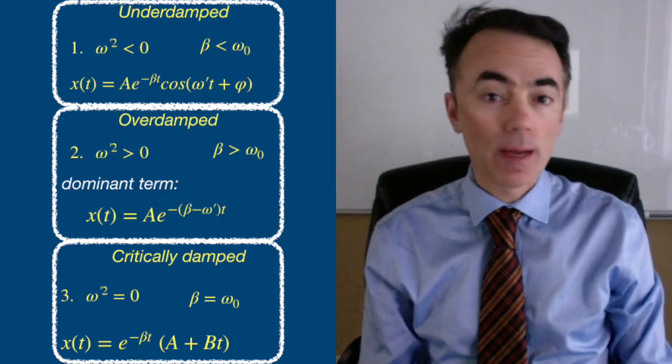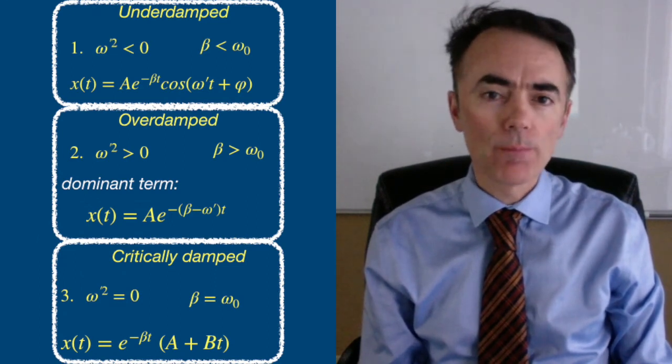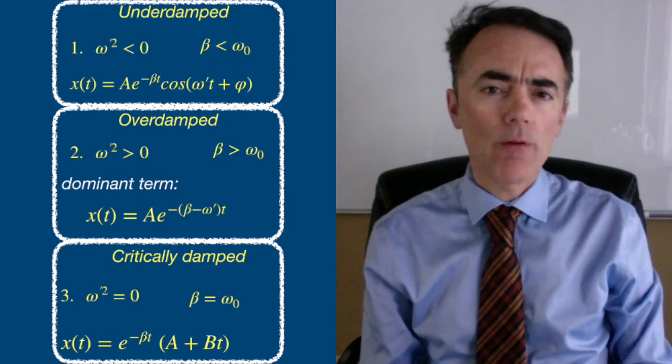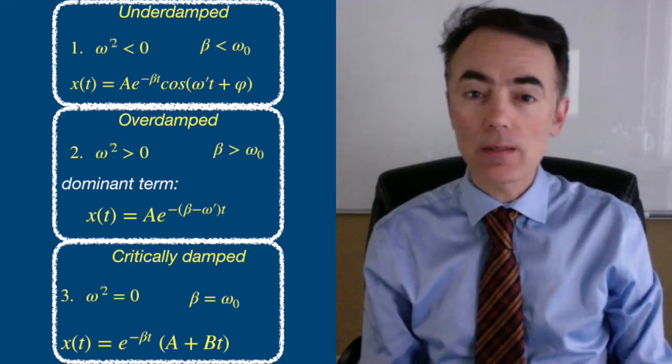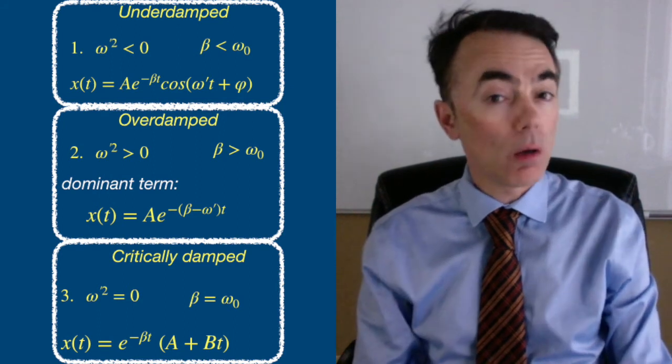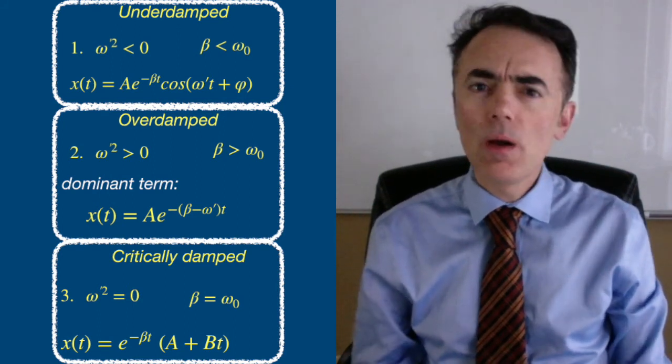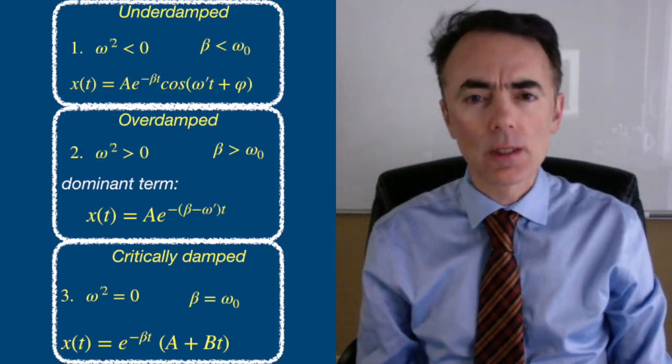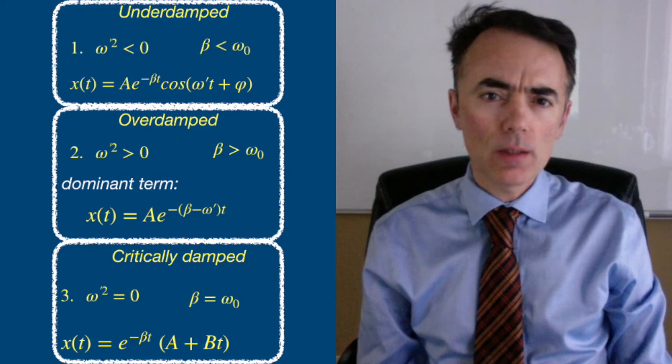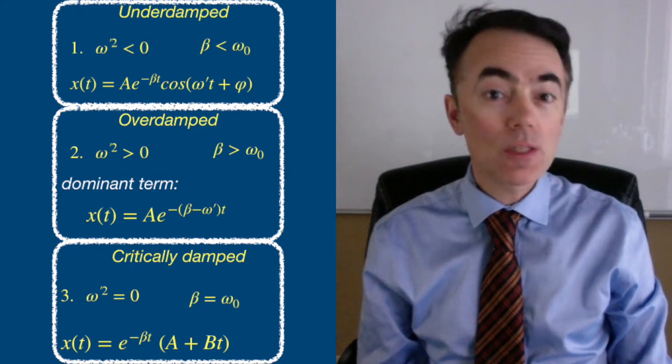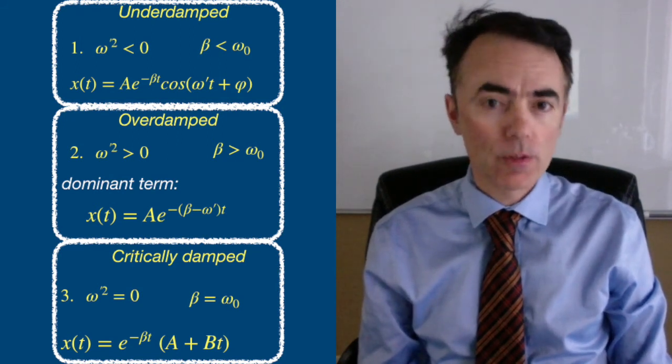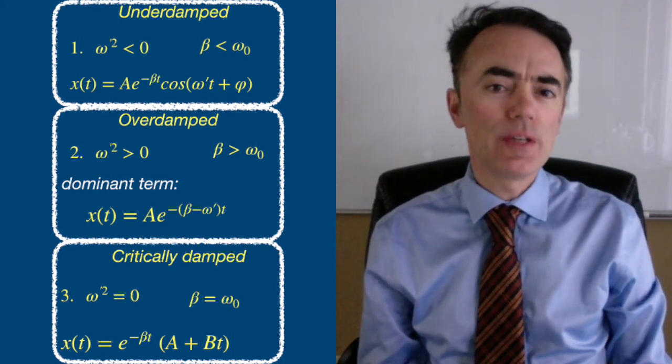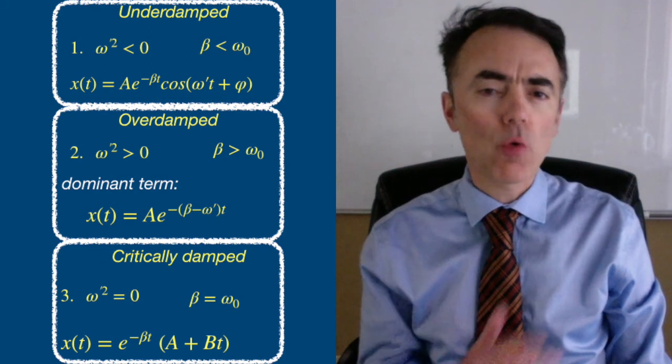If you look at the three cases and their solutions, in the underdamped case beta is smaller than omega naught. The exponent of the underdamped oscillator is beta, which in that case is smaller than omega naught, so it goes slower. In the overdamped case beta is larger than omega naught. The dominant term exponent is beta minus omega prime, which is smaller than omega naught, so it also goes slower. Critical damping goes quickly to zero and it does so without crossing zero.